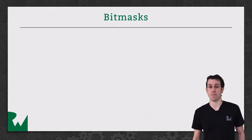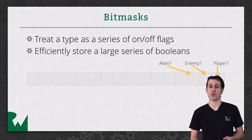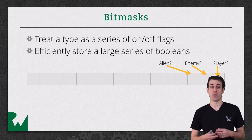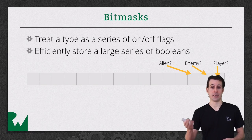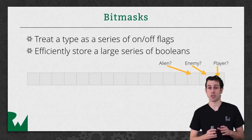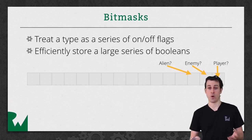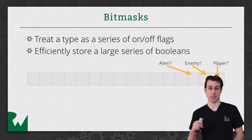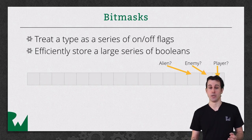Next up we're going to talk about bitmasks. Bitmasks are kind of cool — you can think of them as an efficient way to store a large number of true and false values. As an example, imagine you're making a spaceship game and you want to keep track of what category of objects are in your game. Objects might be a player object, there might be an alien object, and there might be an enemy object. Some objects might actually be a combination of these — for example, an alien is both an alien and an enemy, so you would want both of those to be set to true. You could do this with a big long list of booleans, but if you wanted to be really efficient about it, you could just store them in a single integer value.